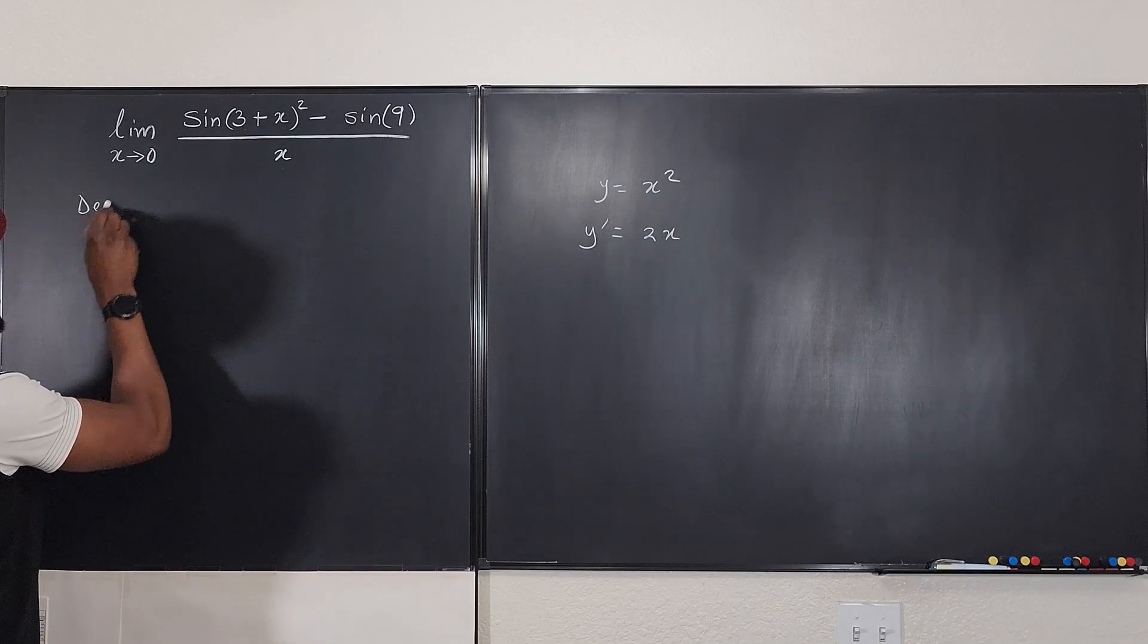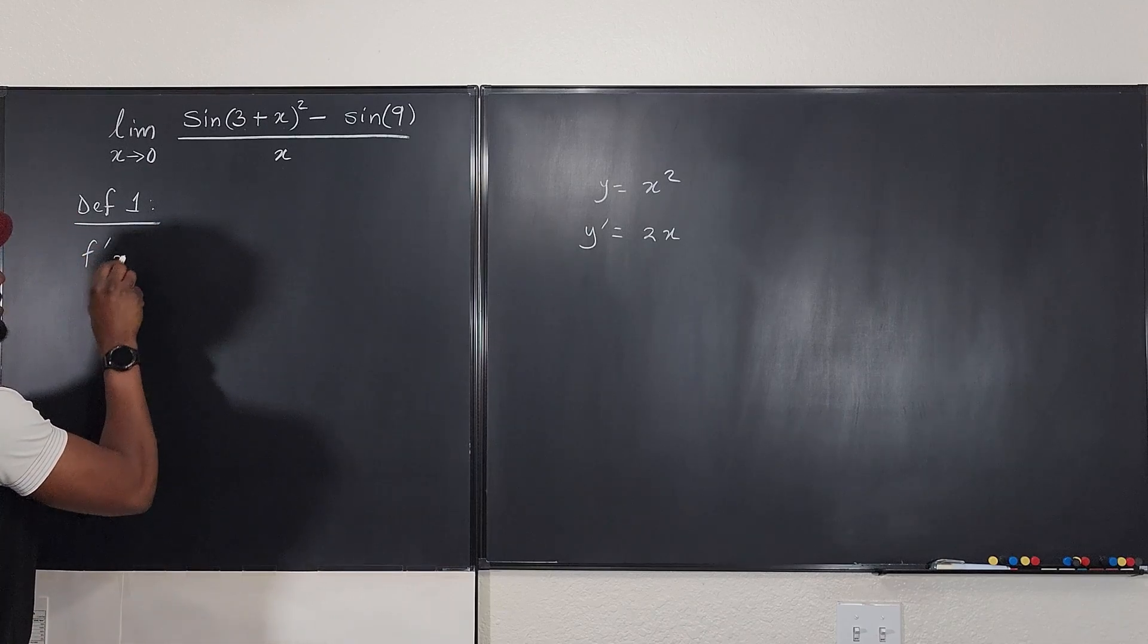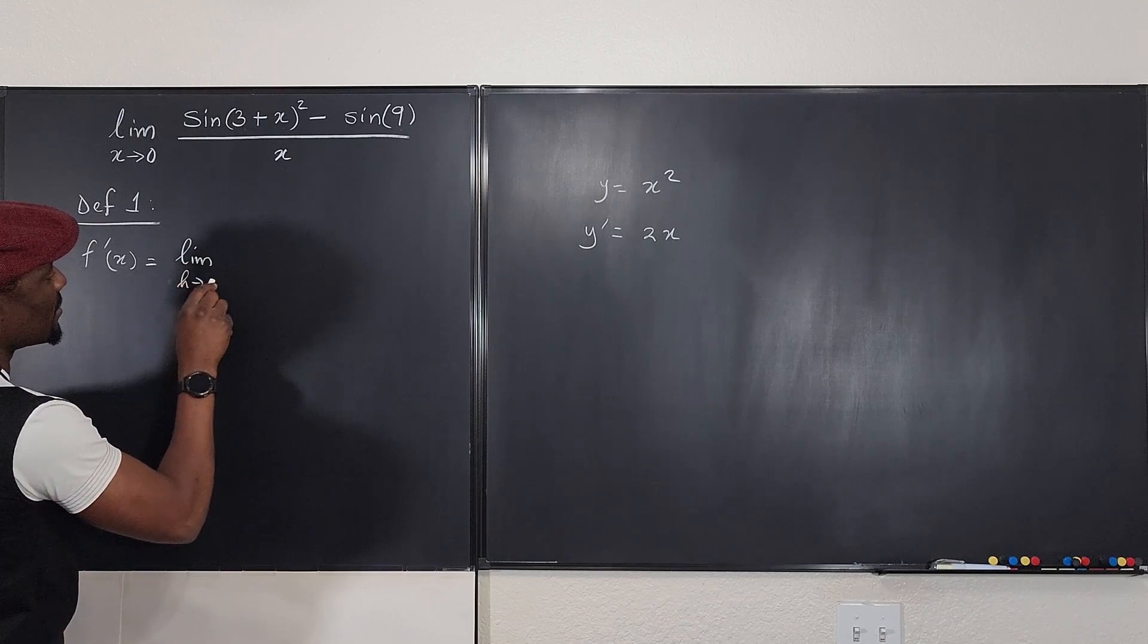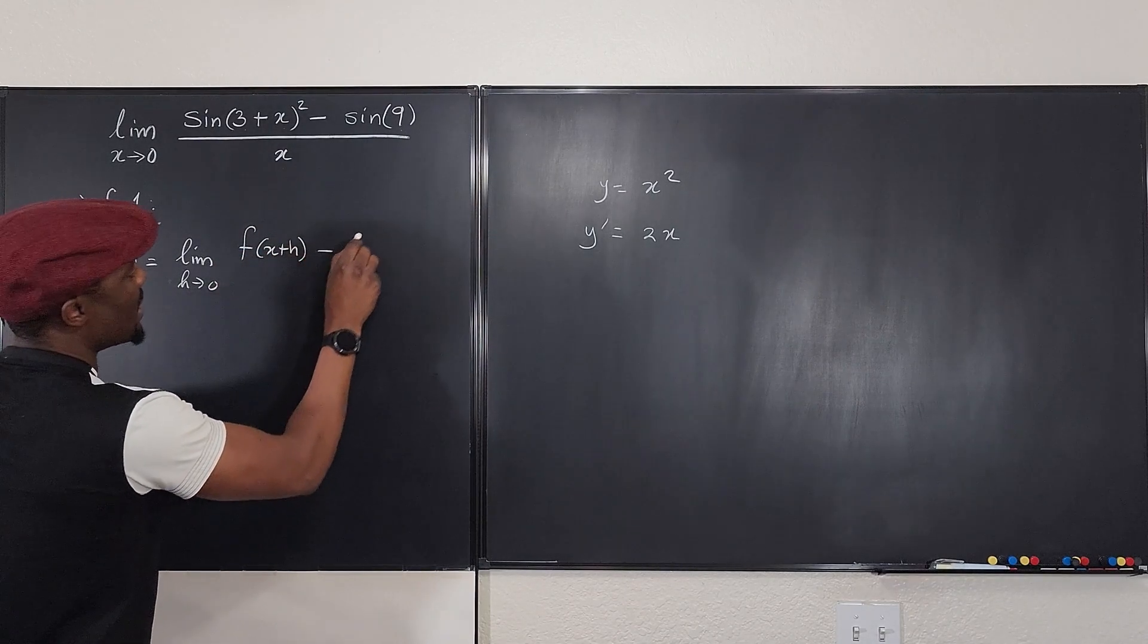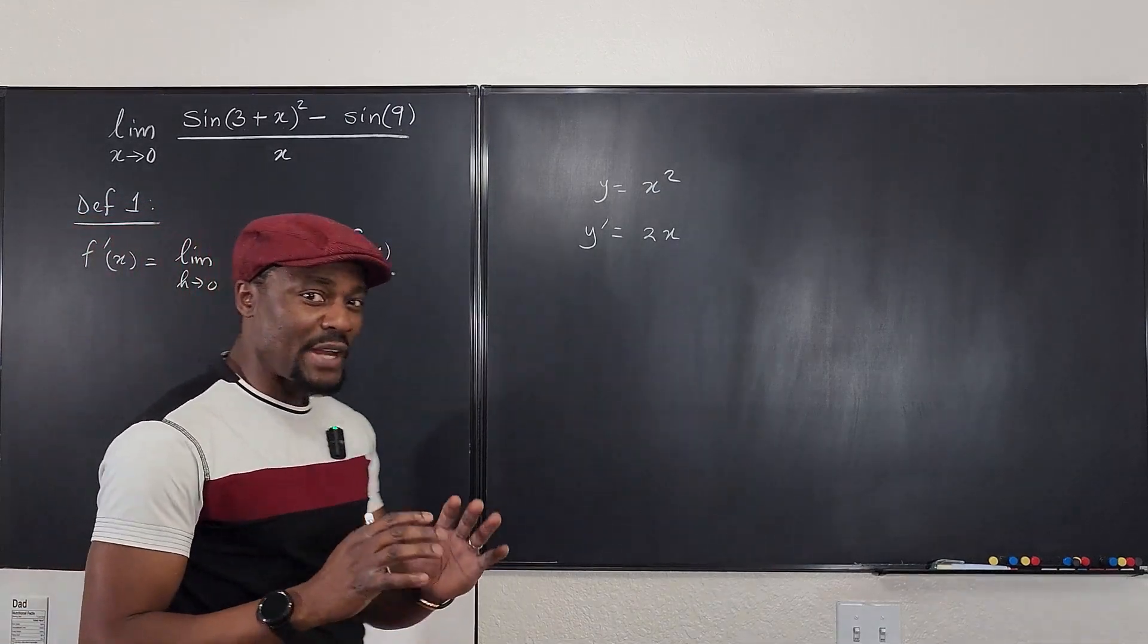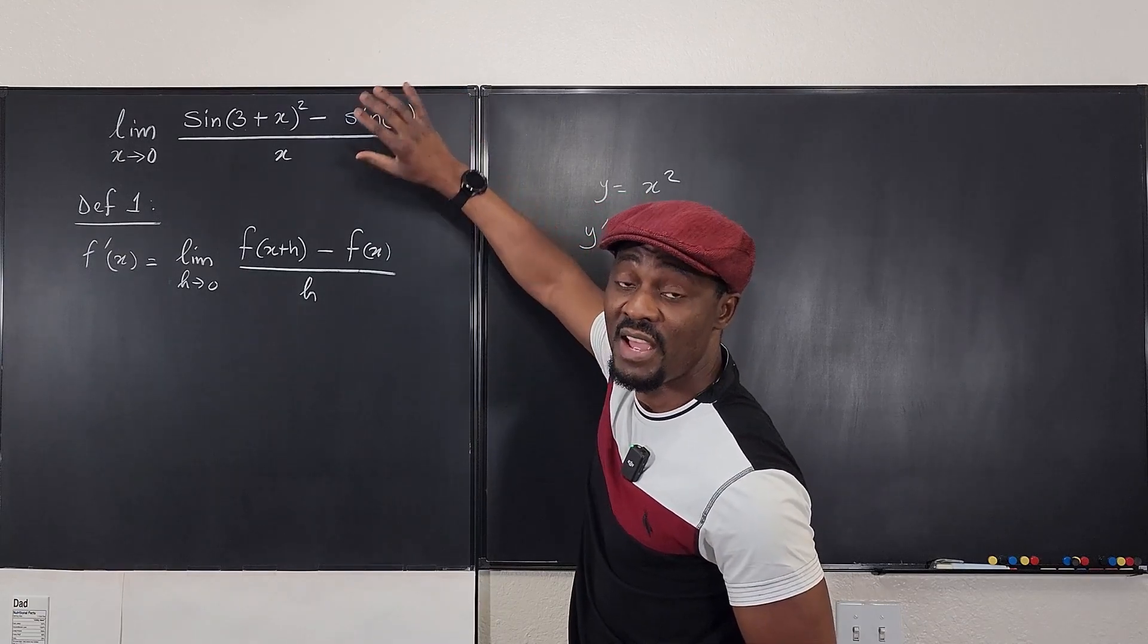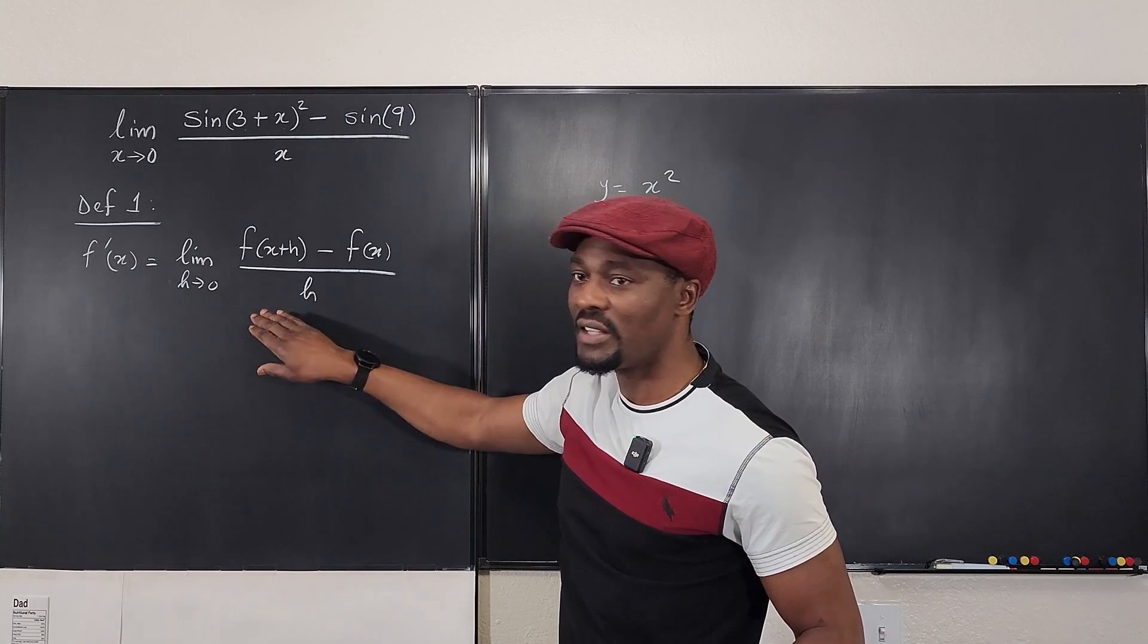Definition one. The first definition is that f prime of x is equal to the limit as h goes to zero of f of x plus h minus f of x over h. It is quite obvious that that is not what's going on here because usually you'll get f of x here. But here, we don't have f of x. We actually have a value here. We have a number here. It means this is not the first definition.